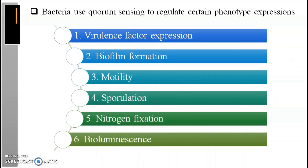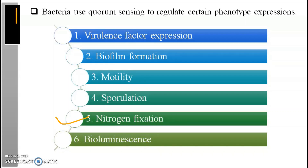For example, in Vibrio fischeri they turn on the light. These are the different phenotypic expressions of bacteria that use quorum sensing. First, they produce virulence. Second is biofilm formation — an association of microbial cells to each other producing a matrix of extracellular polymeric substances. Third is motility — the ability of a cell or organism to move on its own by expending energy. Fourth is sporulation, which is the formation of spores. Fifth is nitrogen fixation — nitrogen in the air converted into ammonia. And sixth is bioluminescence — the production and emission of light by living organisms.